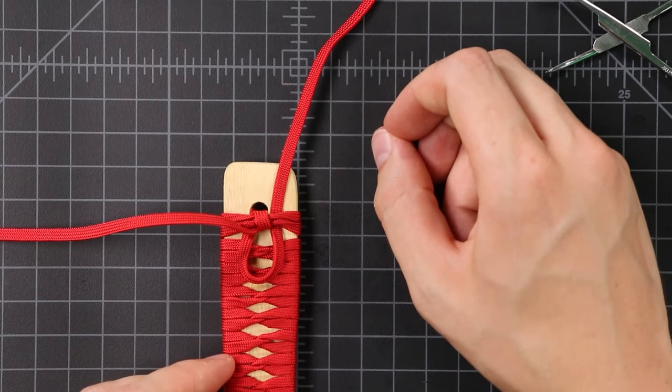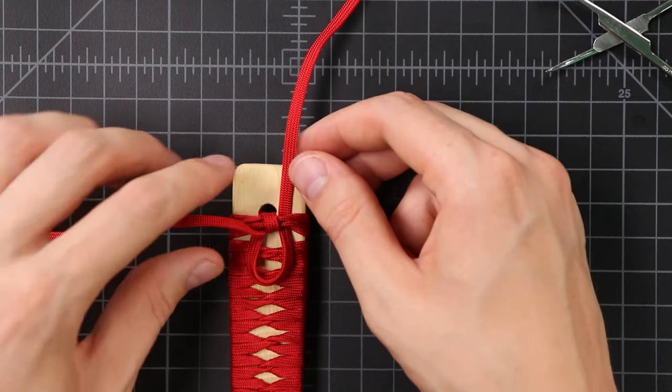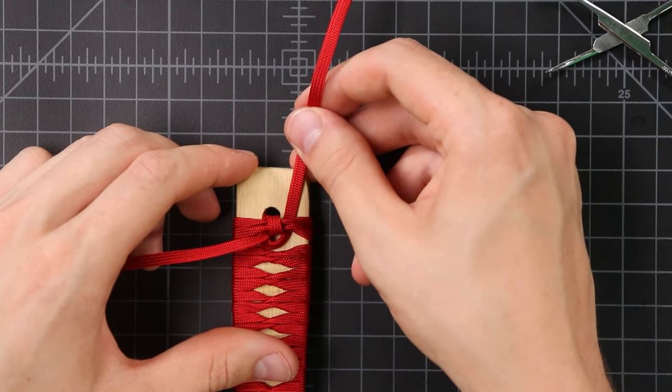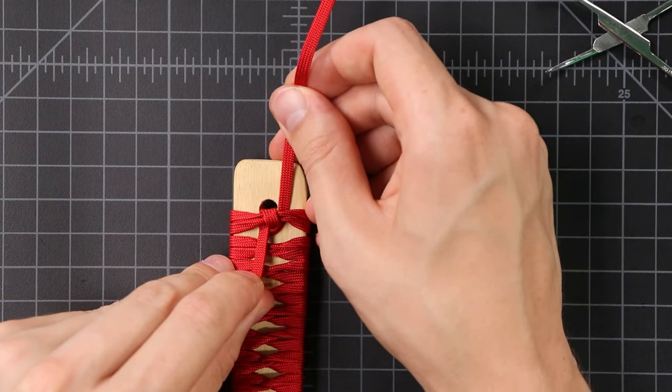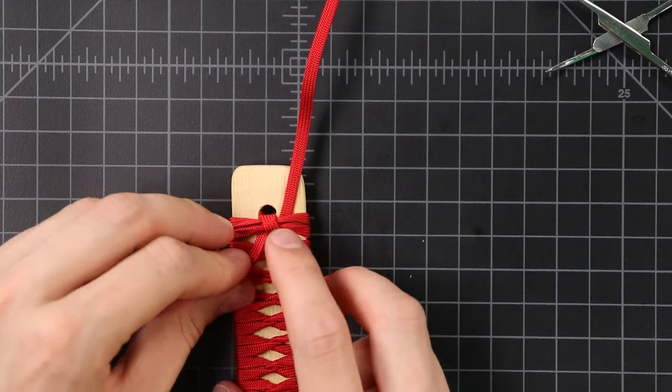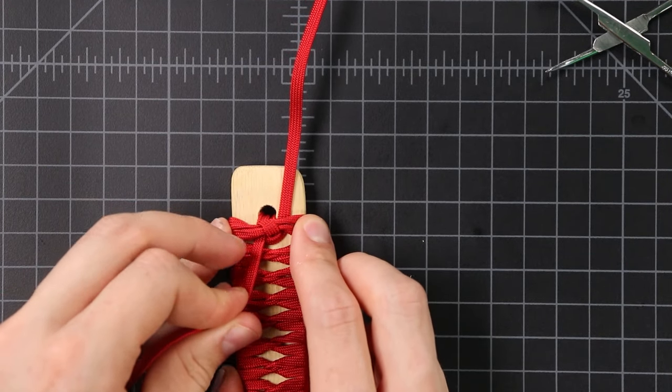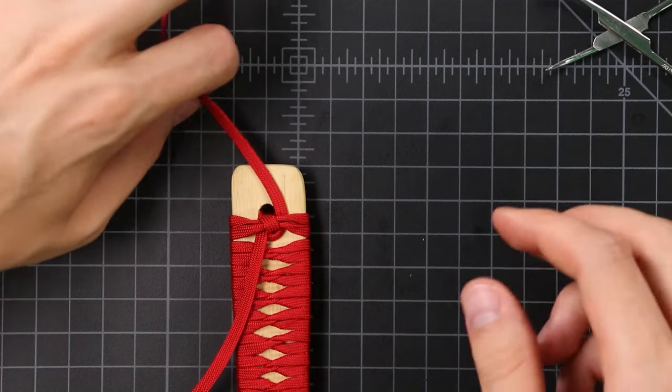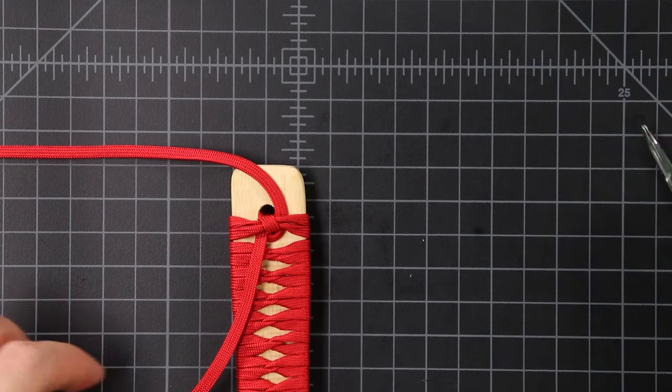And bring it back underneath to the top on the right side. Make sure your loop faces that way. Then you want to make sure that these wraps are tight before you pull that through. Otherwise that's just going to fall and go right through the knot. All right one more time of wrapping around towards the bottom.